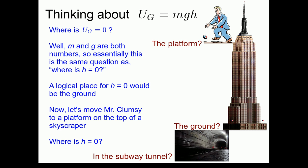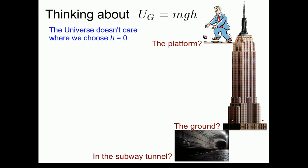Which of these should we choose for h equals zero? Or, which of these should we choose for the zero of gravitational potential energy? Well, the universe doesn't care where we choose h to be equal to zero.